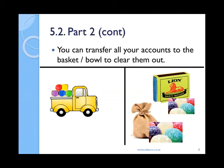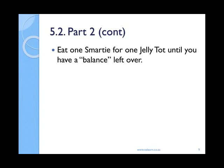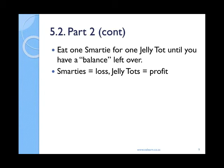Hopefully you can see that even though we don't know what this account is, it doesn't really matter — it is simply acting as a clearing account to help us do the calculation we need. For every smartie, eat one jelly tot until you have a balance left over. Obviously, if you have more smarties than jelly tots you will have smarties left over, and if you have more jelly tots than smarties you will have jelly tots left over. If you have smarties left over this means you made a loss, and if you have jelly tots left over this means you made a profit on the sale of your vehicle.